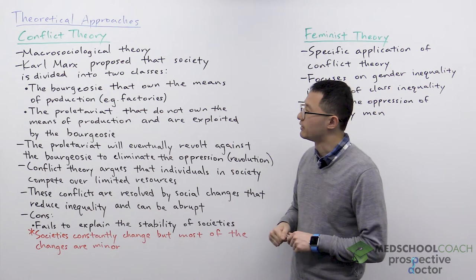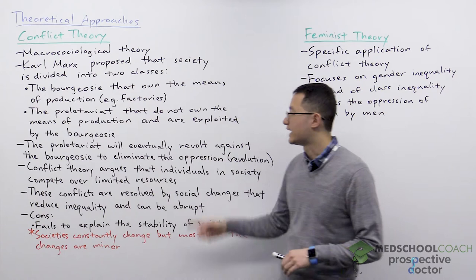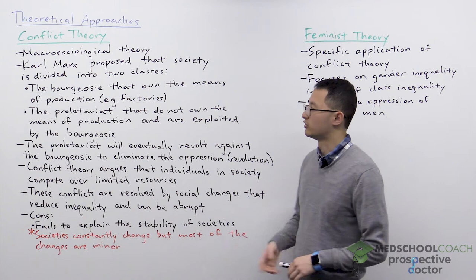The main figure in conflict theory is Karl Marx, who you also want to know for the exam. Karl Marx proposed that society is divided into two classes: the bourgeoisie, who own the means of production — so this would be the factory owners — and the proletariat, who do not own the means of production and are exploited by the bourgeoisie. This was very significant during the industrial era.